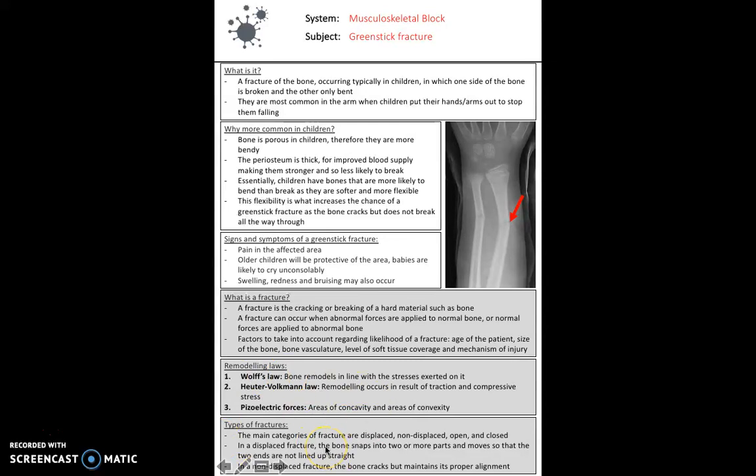Different types of fractures: they can be displaced, non-displaced, open or closed. In a displaced fracture the bone snaps in two or more parts and moves so that the two ends are not lined up straight. Whereas in a non-displaced fracture the bone cracks but maintains its proper alignment. Here the bone has maintained its alignment albeit it has bent on one side, so there's a non-displacement here.